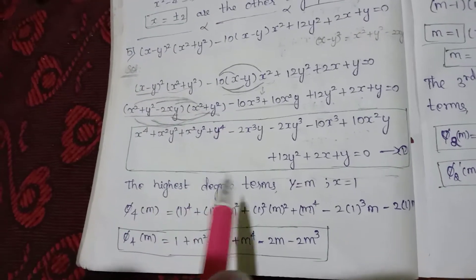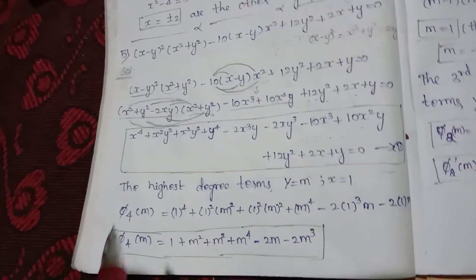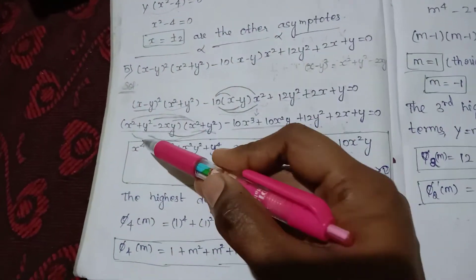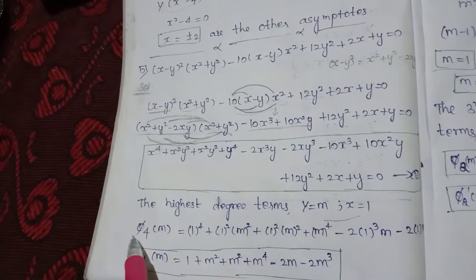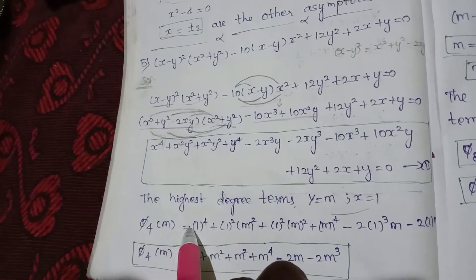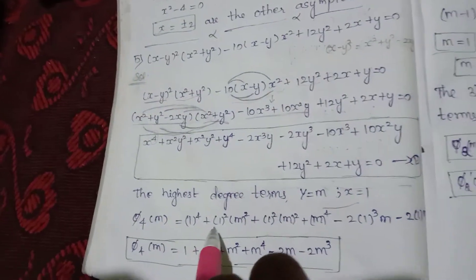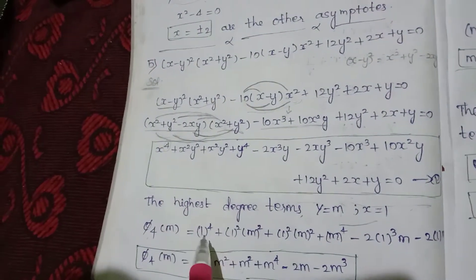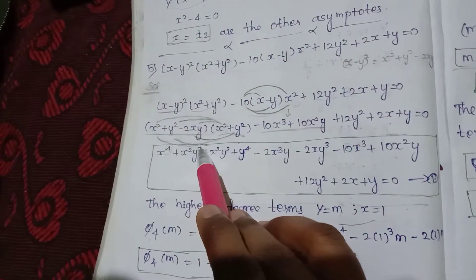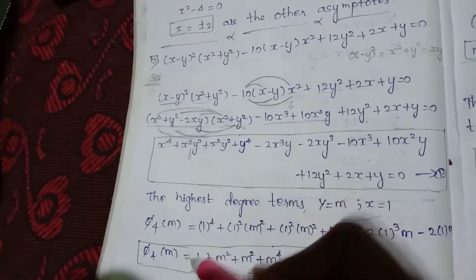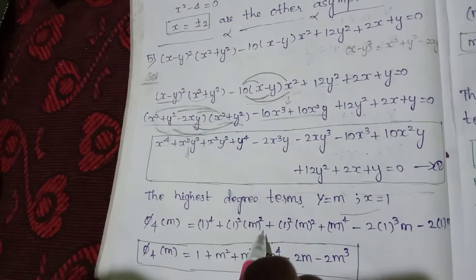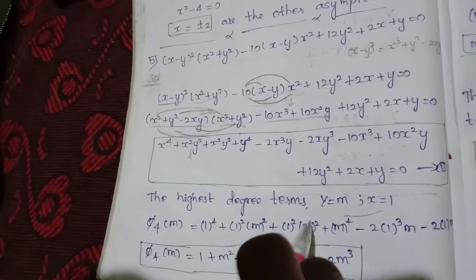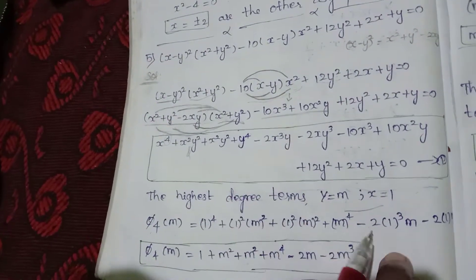For the highest degree terms, substitute y equal to m and x equal to 1. So φ₄(m): this is 1 to the power 4, plus here we have m² plus m², so this is 2m², then m squared times m squared gives m to the power 4. This is the highest degree term giving φ₄(m).